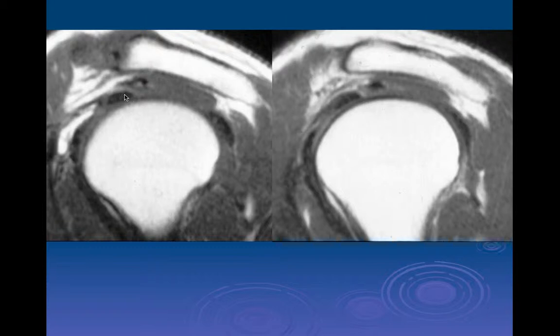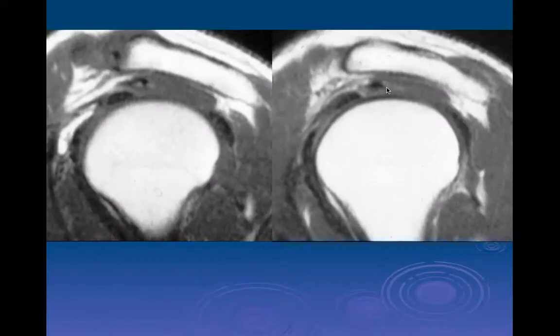Going more peripherally, this is the typical intraarticular position of the long head of the biceps tendon, with the coracohumeral ligament above it, supraspinatus muscle and tendon, and the musculotendinous junction. The biceps tendon is anterior and inferior to the supraspinatus. As we go more laterally, the biceps tendon starts to migrate away from the supraspinatus muscle and then enters the intertuberous groove — what some call the bicipital groove — between the lesser and greater tuberosity, heading distally into the muscle.